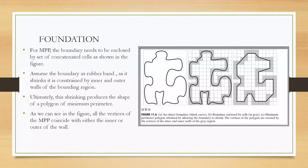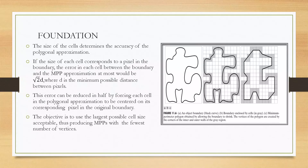As you can see in the figure, the vertices of the minimum perimeter polygon coincide with the inner or outer walls. The size of the cell determines the accuracy of the polygonal approximation. For example, if the size of each cell corresponds to a pixel in the boundary, the error in each cell between the boundary and the minimum perimeter polygon approximation at most would be root 2d, where d is the minimum possible distance between pixels. We can reduce this error by half by forcing each cell in the polygonal approximation to be centered on its corresponding pixels in the original boundary.